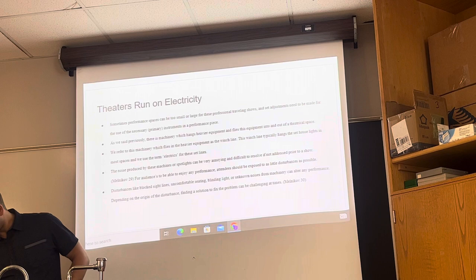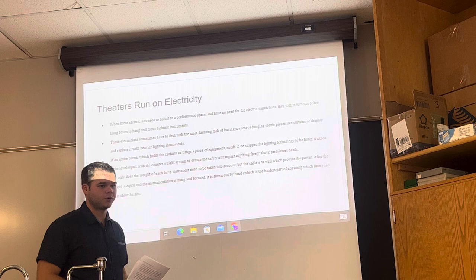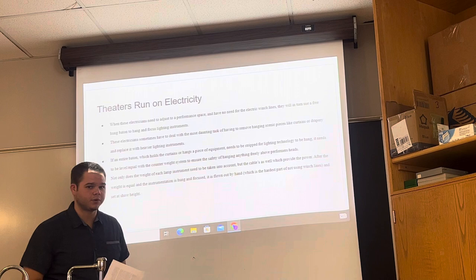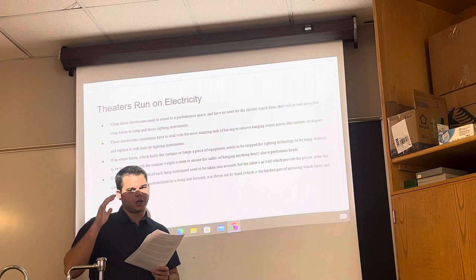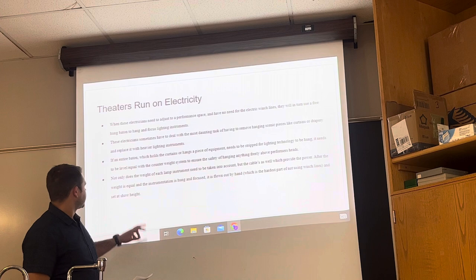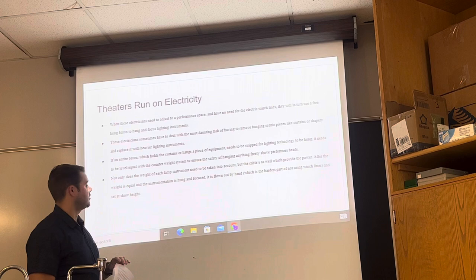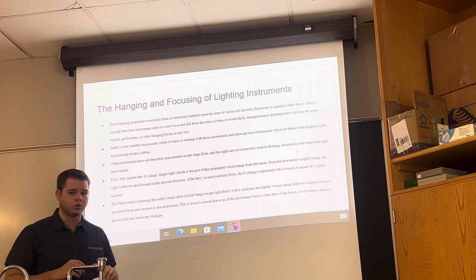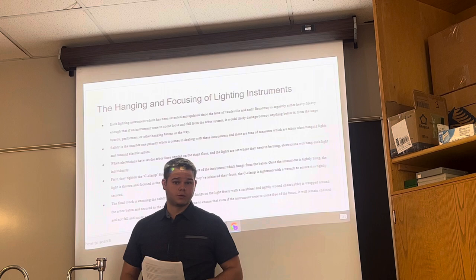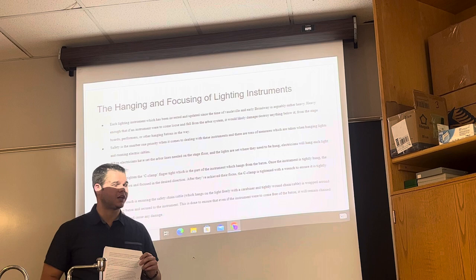There are various disturbances that can be addressed with electricity — such as the winch line, blocked sight lines, and humming spotlights — and these are usually handled offstage so as not to hinder the audience's experience. If an entire batten holding curtains or equipment needs to be rigged for lighting, it needs to be level and equal with the counterweight system, all pulled by hand. The heaviest I pulled here at Shawnee State was roughly 600 pounds with two other people. It was very, very difficult and I do not recommend it. Use a winch line if you ever get the chance to work in a theater.